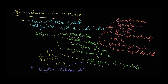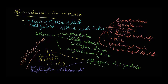Other atherogenic lipoproteins include chylomicron remnants, which have ApoB48 as their surface marker. The atherogenicity of these lipoprotein species is related to their potential to be oxidized. So a key word in the pathogenesis of atherosclerosis is oxidized lipoproteins.